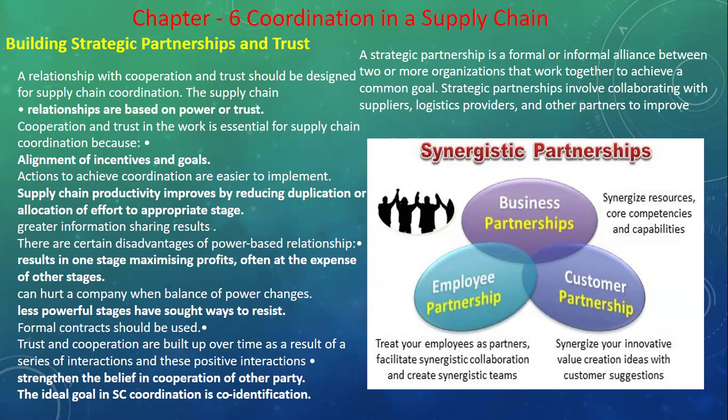Trust and corporation are built up over time as a result of a series of interactions, and these positive interactions stack up the belief of cooperation of the other parties. This positive interaction will strengthen the other party as well. The ideal goal of supply chain coordination involves four identifications. A strategic partnership is a formal and informal alliance between two or more organizations.